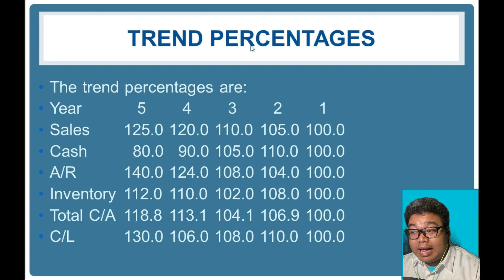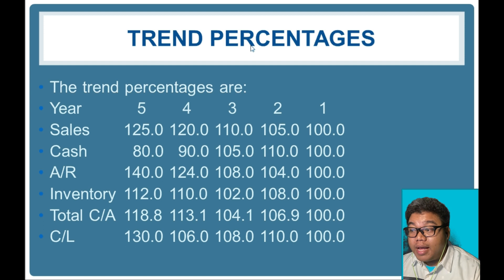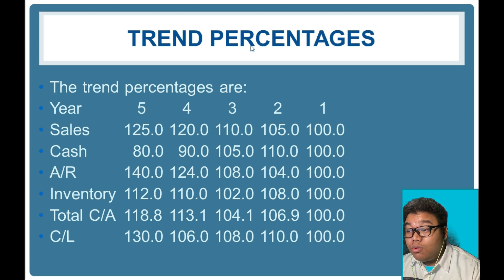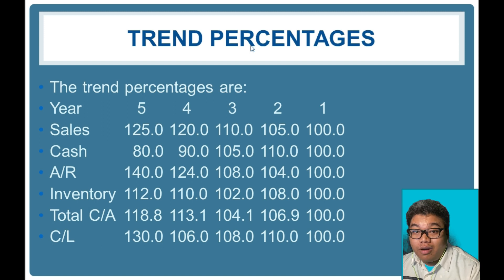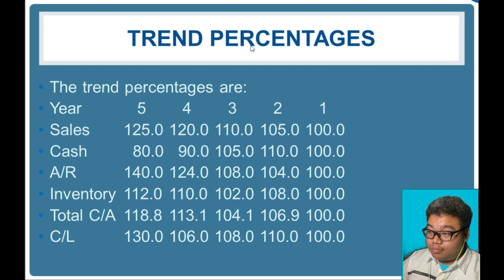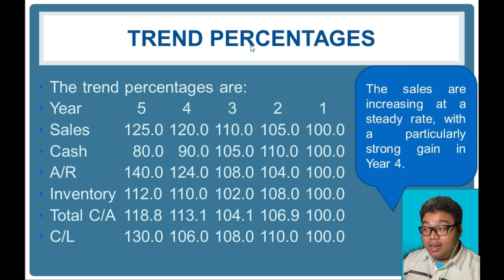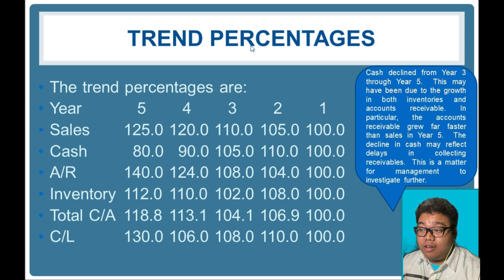The cash balance initially increased and then decreased. Remember, year one is the base year, so the sales from year five compared to year one are 25 percent higher. This is not a year-over-year comparison between consecutive years; it is each year compared back to year one — so year one versus two, one versus three, one versus four, and one versus five. Sales are increasing — that is the key observation.